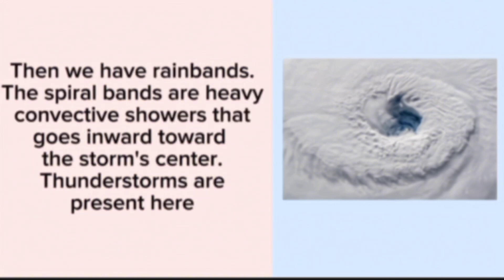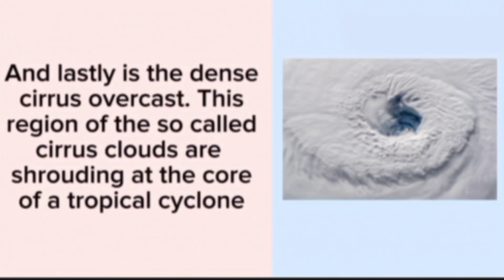Then we have the rain bands. The spiral bands are the heavy convective showers that go inward toward the storm's center. Thunderstorms are present here. And lastly is the dense cirrus overcast. This region is also called cirrus clouds or shrouding at the core of the tropical cyclone.